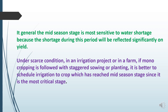In general, the mid-season stage is most sensitive to water shortage because shortage during this period is significantly reflected in yield. For most crops, the least sensitive stages are ripening and harvesting, except for vegetables like lettuce and cabbage, which need water up to harvesting.